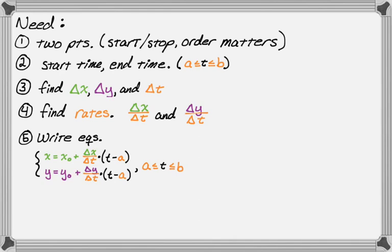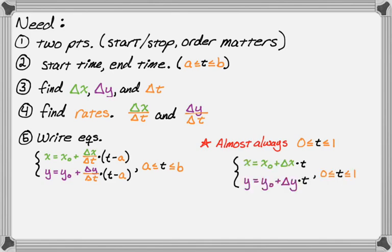It's almost always the case that t is between zero and one, because usually you just have a starting point and a stopping point and want to get from one to the other with no additional requirements. So you calculate delta x, assume the time interval is one, and go from zero to one. That makes your equations simpler — since delta t is one and you're going from zero to one, they simplify down quite a bit.